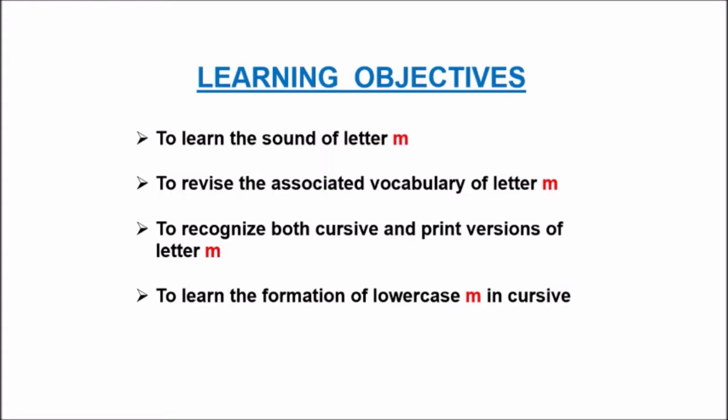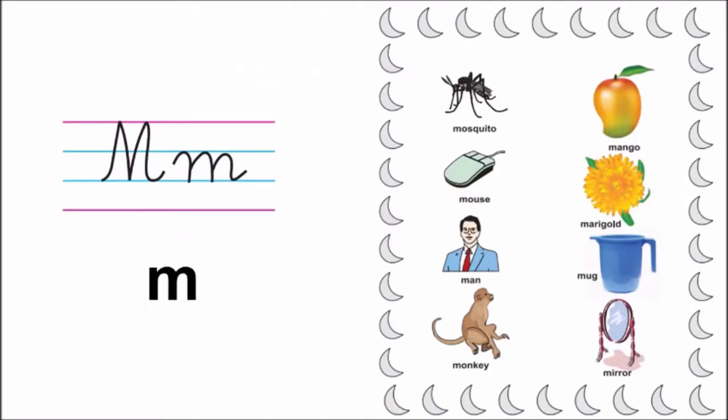So, let us start. Look at the arrow children, this arrow is pointing at capital cursive M. And this is lowercase M in cursive. And this is print M. And what is the sound of M children? M-M. Say again. M-M.